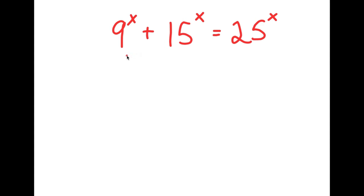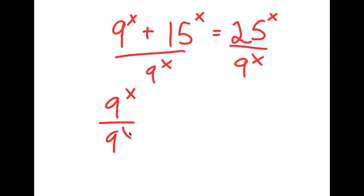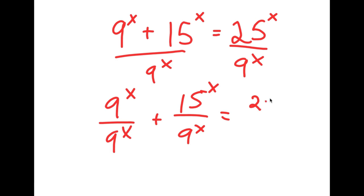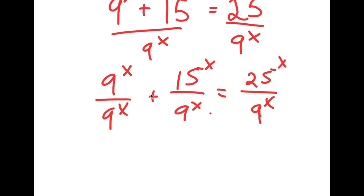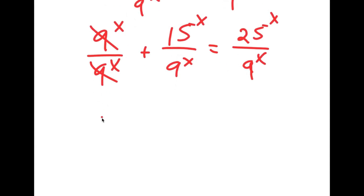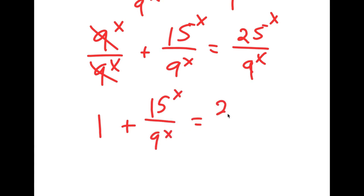I'm going to first start by dividing both sides by 9 to the power of x. This results in 9^x over 9^x plus 15^x over 9^x is equal to 25^x over 9^x. Since 9^x over 9^x cancels, I get 1 plus 15^x over 9^x is equal to 25^x over 9^x.